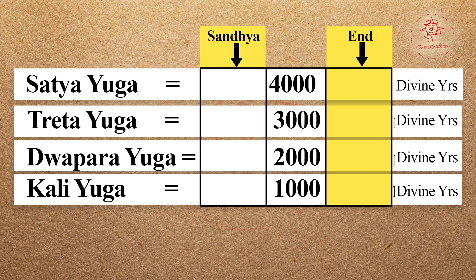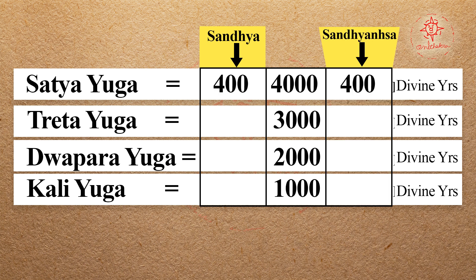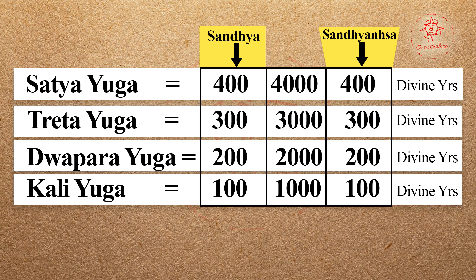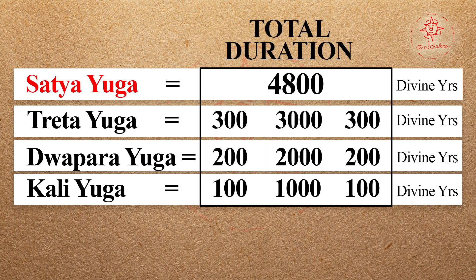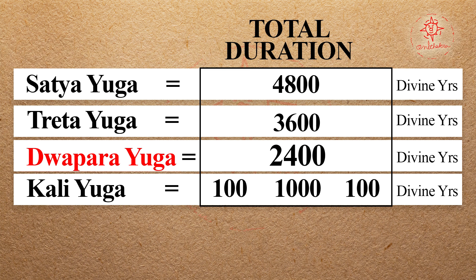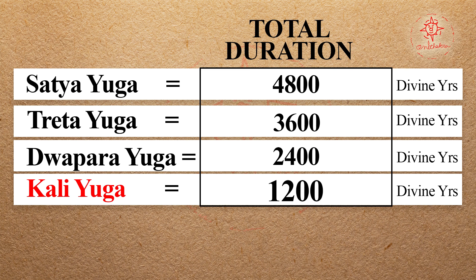These buffer portions are called Sandhya and Sandhyangsa. For Satya Yuga it is 400 divine years each; for Treta it is 300 each; for Dwapar it is 200 each; and for Kali it is 100 each. So the total duration of Satya Yuga is 4,800 divine years; Treta Yuga is 3,600; Dwapar is 2,400; and Kali Yuga is 1,200 divine years.